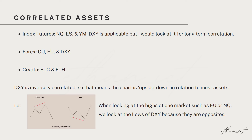For Forex, I only analyze EU. The correlated assets are EU, GU, and DXY. For crypto, it would be Bitcoin and Ethereum. One thing to note is that DXY is inversely correlated, so that means the chart is upside down in relation to most assets.